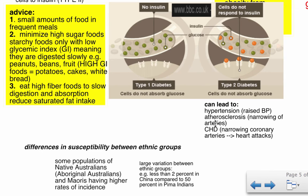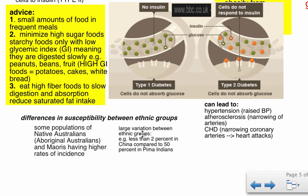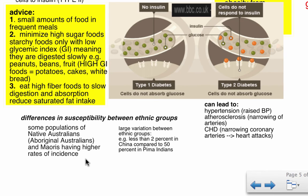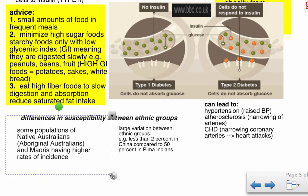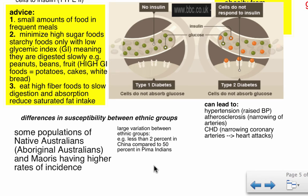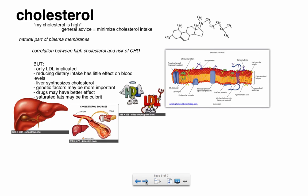Diabetes can also lead to other conditions such as coronary heart disease, atherosclerosis, and hypertension, which means higher blood pressure. It's important to note differences in susceptibility between ethnic groups — Aboriginal Australians and Maoris have higher rates of diabetes incidence. In contrast, only about two percent of people in China are diabetic, compared to fifty percent in Pima Indians, so being aware of your background and diet is important.